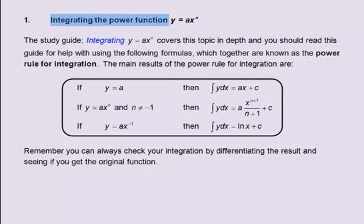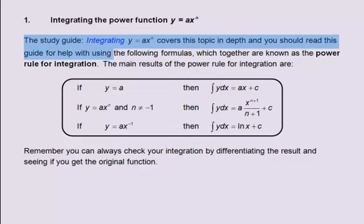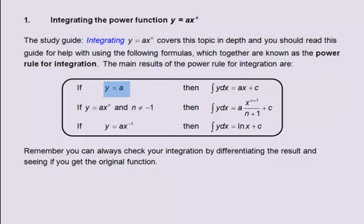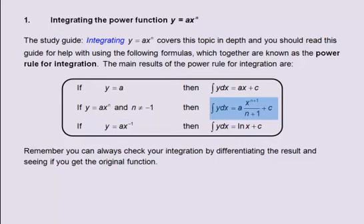1. Integrating the power function y equals ax to the n. The study guide 'integrating y equals ax to the power n' covers this topic in depth, and you should read this guide for help with using the following formulas, which together are known as the power rule for integration. The main results are: if y equals a (i.e. a constant), then the integral of y with respect to x equals ax plus c. If y equals ax to the power n, and n does not equal minus 1, then the integral of y with respect to x equals a multiplied by x to the power n plus 1, divided by n plus 1, plus c.